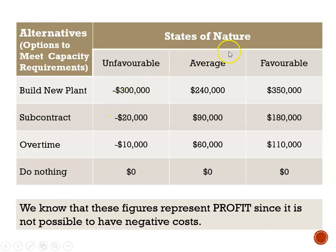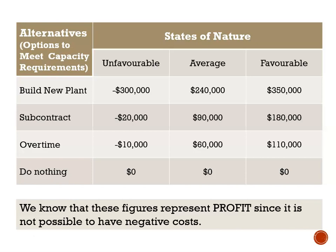We also have the states of nature for this table — the same as before: unfavorable, average, or favorable — which speak to what the conditions will look like in the future. Just looking at this table, we know that these figures represent profit. Since if it was cost, we know we don't have negative cost — the lowest your cost can be is zero. And it couldn't be revenue because the lowest revenue can be is zero. So once we are seeing negatives, we know that these represent profits.